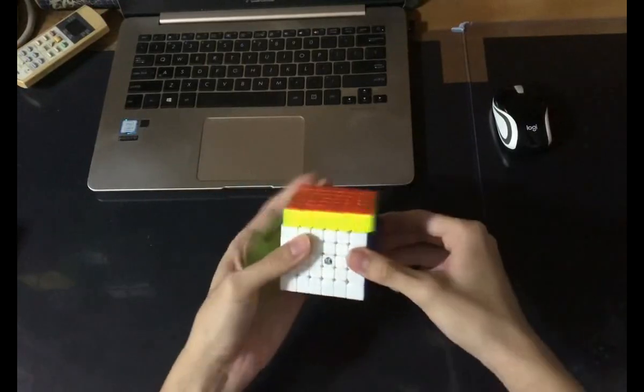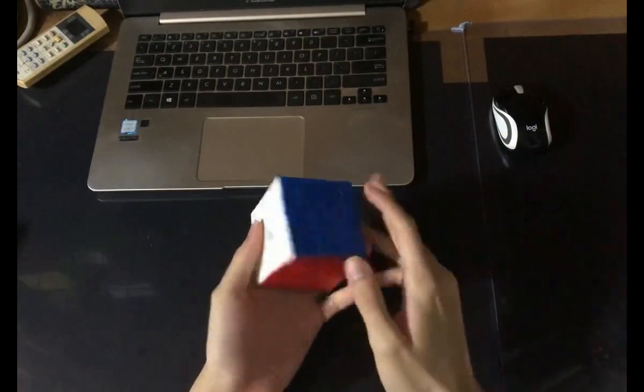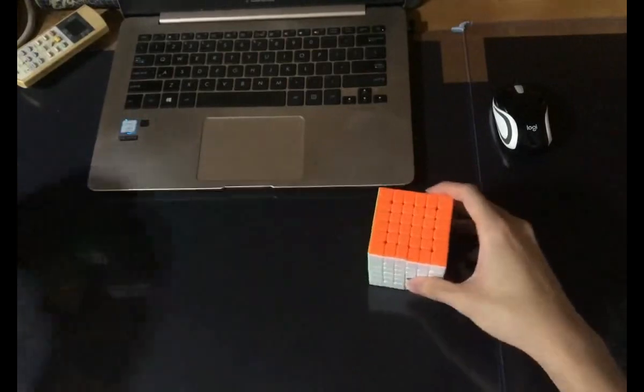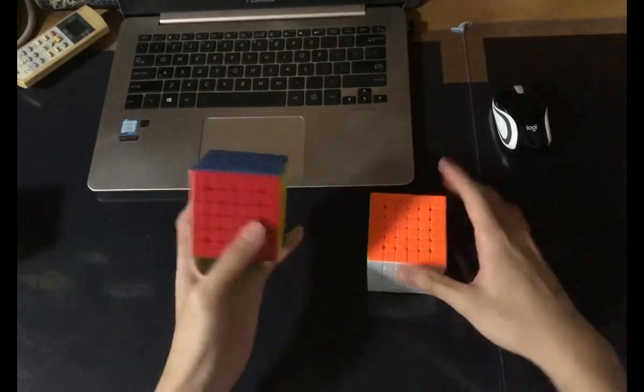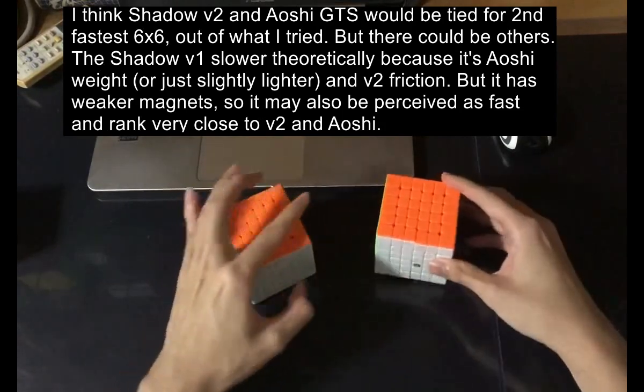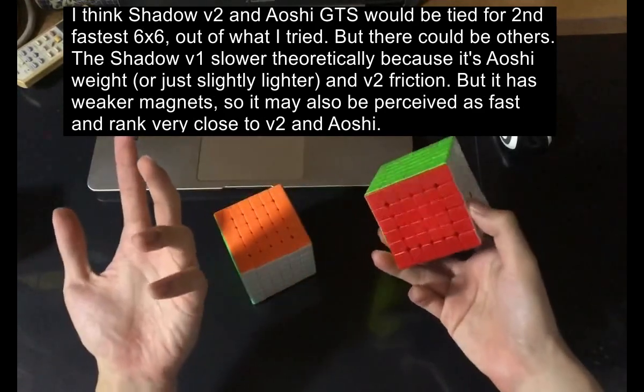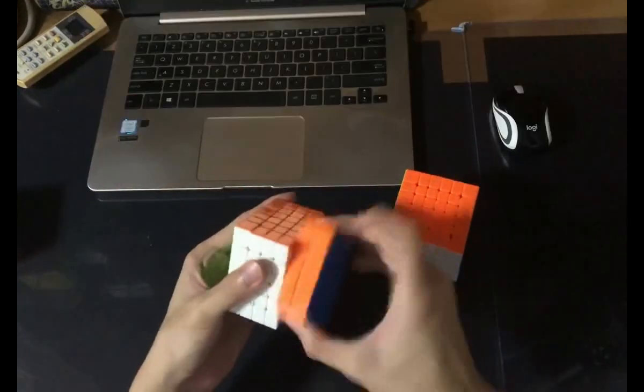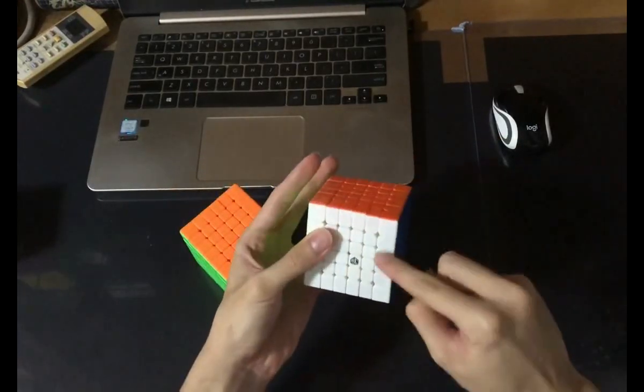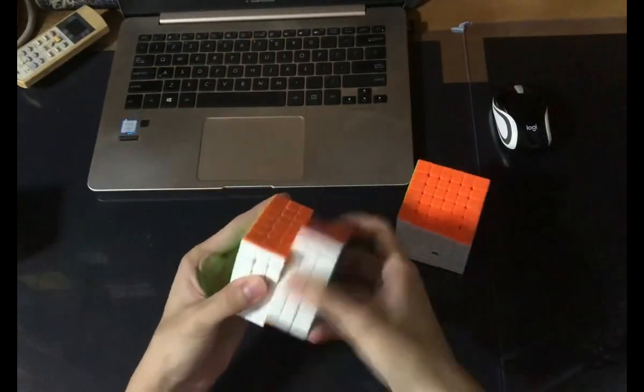As for turn speed, the Shadow V2 is definitely a lot slower than the MGC, but I wouldn't say it's a matter of this cube being slow. It's more of the MGC being an unusually fast 6x6. If you were to compare with just the previous generation, in particular the Aoshi GTS which is my previous main before the MGC, the speed across the Aoshi GTS and the Shadow V2 are actually really similar to each other. But they feel slightly different in a sense where the Aoshi has a lot less friction but the cube is a bit heavier, whereas the Shadow is lighter and the friction is a bit higher. In the end it cancels out and it gives a very similar turning force across the two cubes.